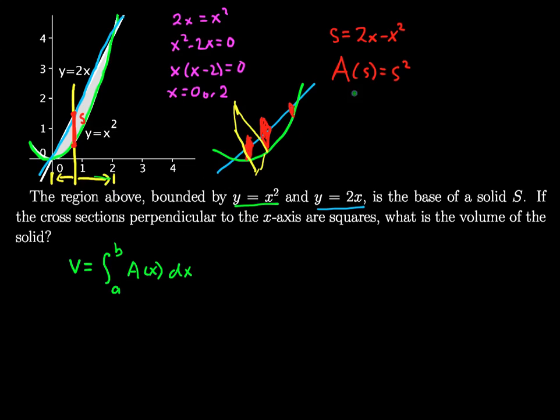I have a function for area but it's not in terms of x yet. So let's work on that. Area in terms of s is s squared. s is 2x minus x squared. So I know that the area function in terms of x is equal to (2x minus x squared) squared.